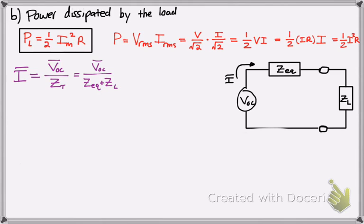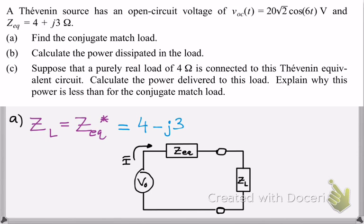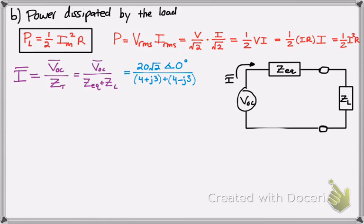And the total impedance, this is like Ohm's law, which is ZEQ plus ZL. So where we got the VOC from, and we know ZEQ was also given as 4 plus J3. And we calculated ZL, which is simply the conjugate of the equivalent impedance, which was 4 minus J3. Some combined terms there and we simplify.